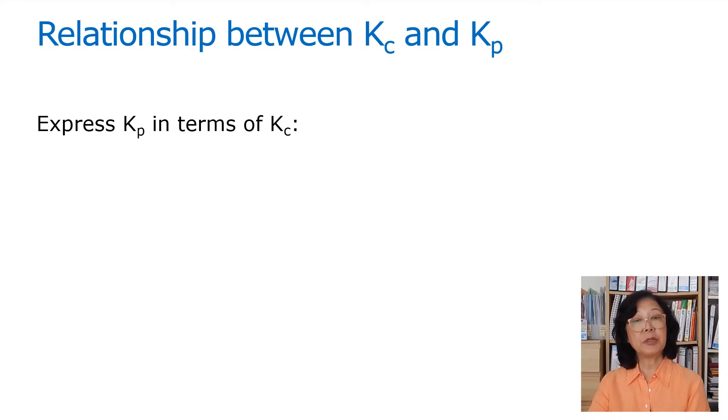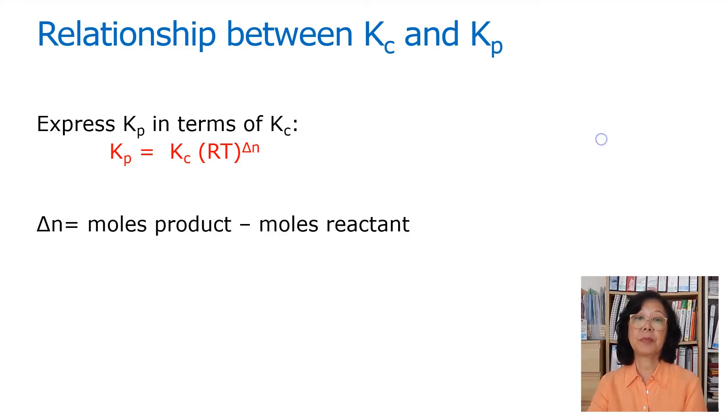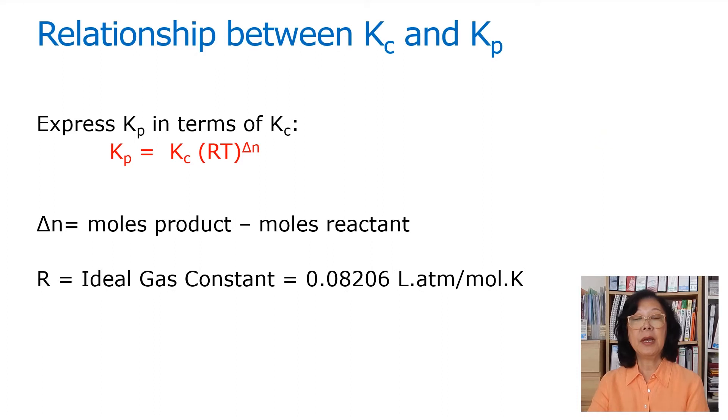We can then express Kp in terms of Kc, which is Kp equals Kc times RT to the delta N, delta N representing the moles of product minus the moles of reactant from your balanced equation. R is the ideal gas constant and T is the temperature in Kelvin.